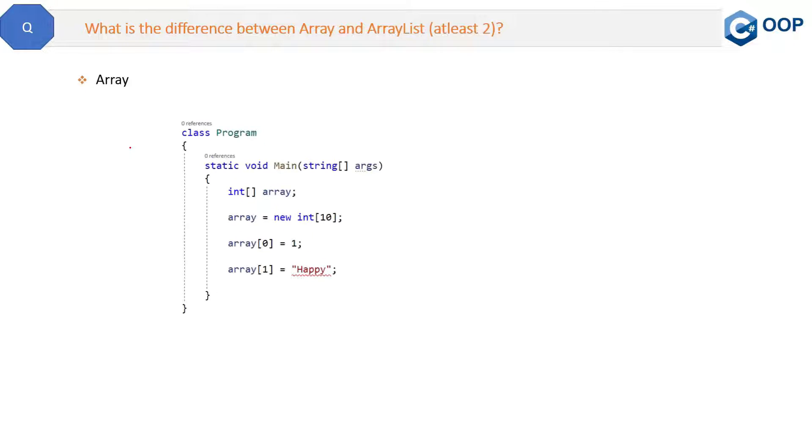So let's see the differences with the help of code here. So here is the code of the array. We are doing nothing but just declaring the array, assigning the array, and then assigning the items to the arrays. This is a simple array. And now same thing we are doing with the ArrayList. We are declaring the ArrayList, we are creating the object of the ArrayList, and then we are adding items in the ArrayList.